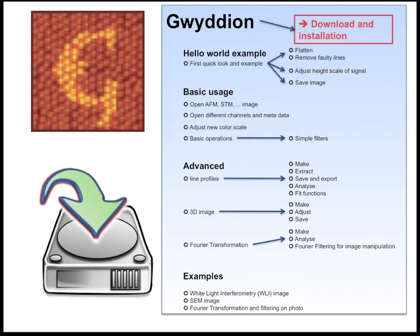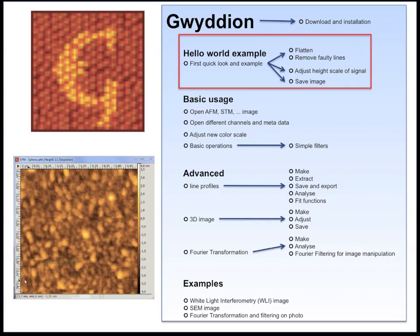First, I will show you how to download and install the software. Then I will show you a first quick example in which I will open an image and perform some rudimentary operations such as flattening, removing faulty lines, adjusting the color scale, and saving the image.